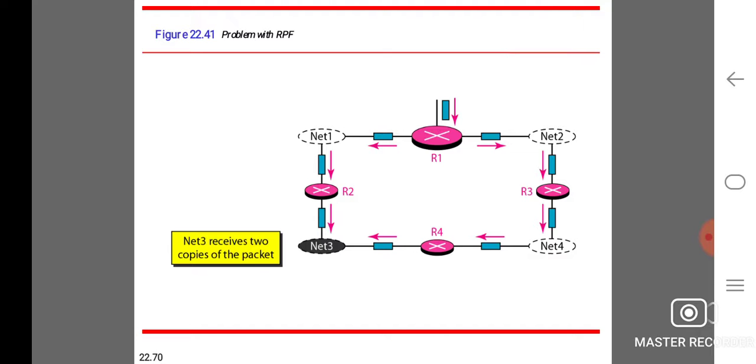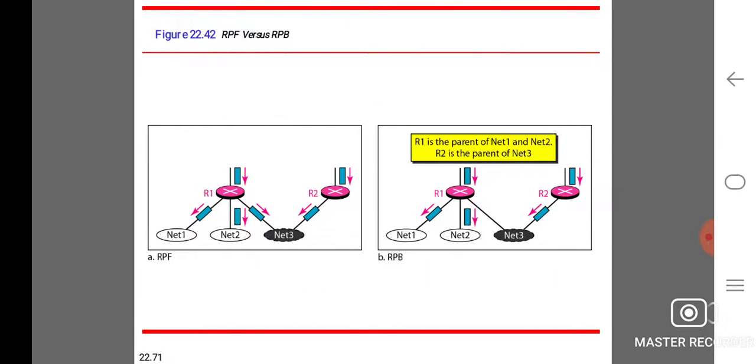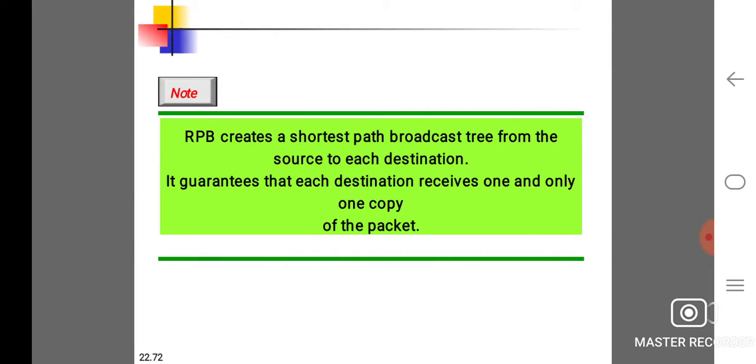Here net 3 receives two copies of the packet. RPF versus RPB: R1 is the parent of net1 and net2, R2 is the parent of net3. RPB creates shortest path broadcast tree from the source to each destination, guaranteeing that each destination receives one and only one copy of the packet.